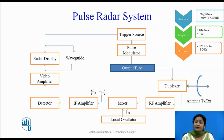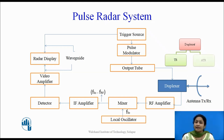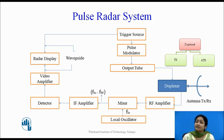The output tube signal is fed to the duplexer, which provides the input to the antenna, and signals from the antenna are transmitted into free space. The duplexer consists of two tubes: a TR (gas discharge) tube and an ATR tube. Its basic function is to protect the receiver while transmitting the high power signal. The TR tube is activated when receiving, and the ATR tube is activated when transmitting.